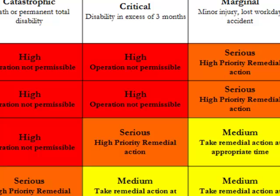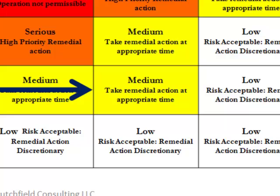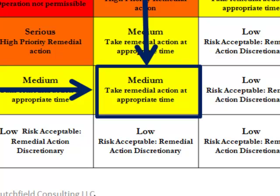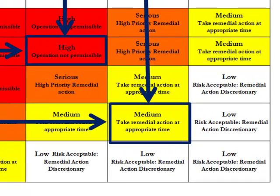We may develop our alternatives and then reassess our risk. In this case, we might assume that we have changed the risk to being remote, not likely to occur, and that the severity would be marginal. This gives us a medium risk, where we can take remedial action at the appropriate time. We can now compare this against our previous risk and see the relative scale that we've changed the situation by. This also allows us to evaluate risk and set priorities — the high risk operation should be worked on in advance of the medium risk.